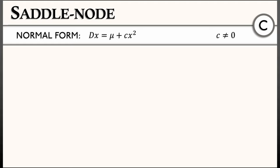Now, this normal form could have higher order terms in it. We could have terms of order x cubed and higher, but we're going to ignore that for the analysis that we are going to do. So dx equals mu plus cx squared.